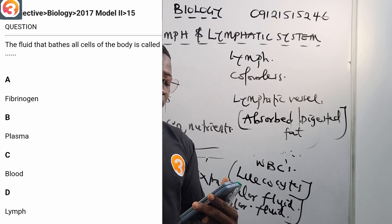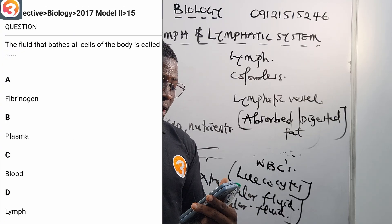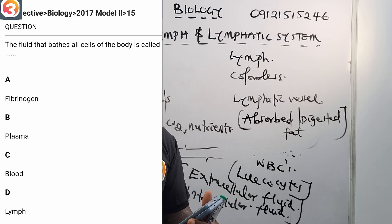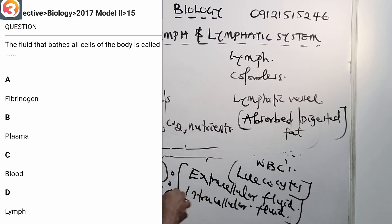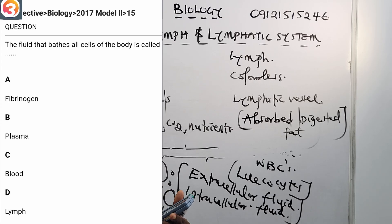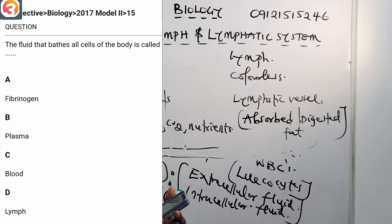2017 number 15 says: the fluid that bathes all cells of the body is called — A: fibrinogen, B: plasma, C: blood, D: lymph. The correct answer is D — the lymph. It is the lymph that bathes all cells of the body.